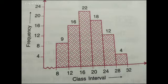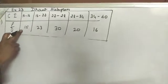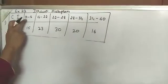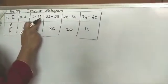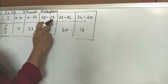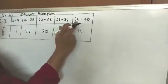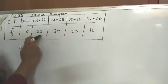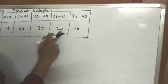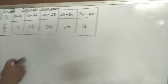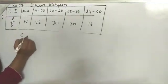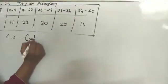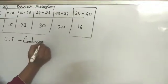Then construct rectangles with class interval as base and corresponding frequency as height. You will get the histogram. The given question is: class interval 10 to 16, 16 to 22, 22 to 28, 28 to 34, 34 to 40, and the frequency is 15, 23, 30, 20, 16. The class interval is in continuous form.